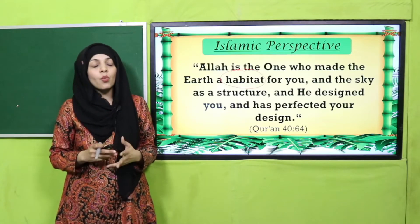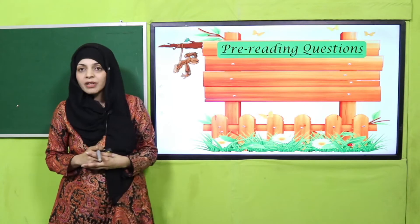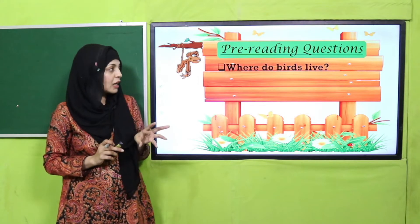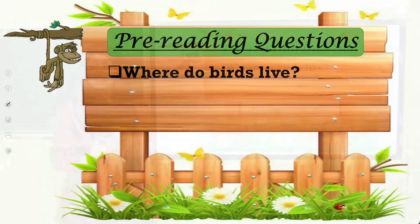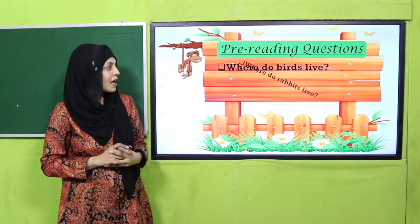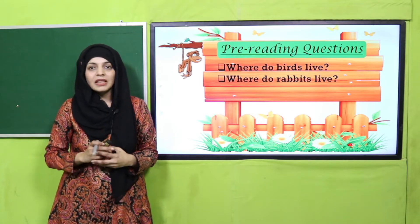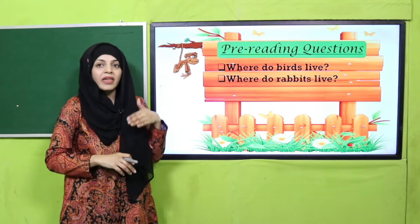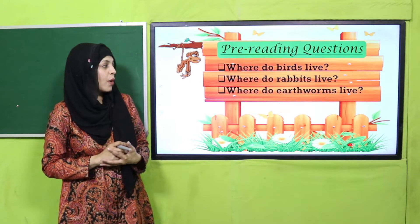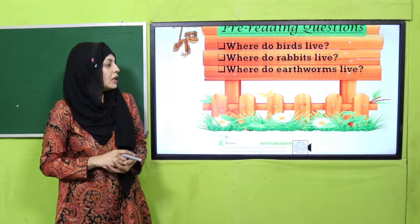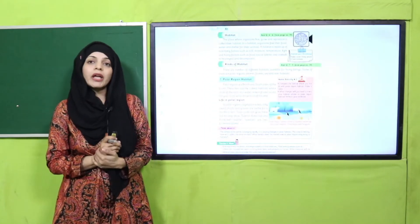Now some pre-reading questions — you can pause and think. Where do birds live? They live in their nests — and where do they build nests? On a tree. Where do rabbits live? They live underground — they burrow and make burrows to live inside. Where do earthworms live? They live in the soil.